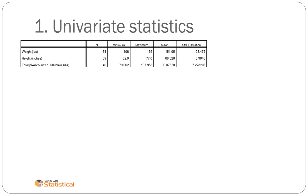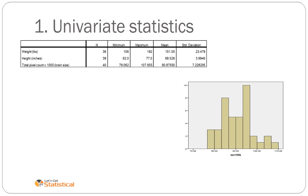First of all, we're going to look at the same study as last time, however this time the two independent variables are weight and height, and we're going to try and use a person's weight in pounds and their height in inches to predict their brain size, which in this case is MRI times 1000.